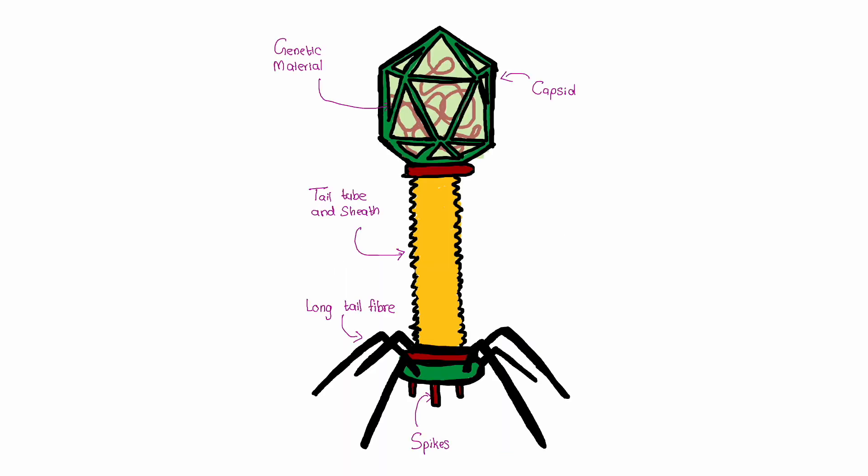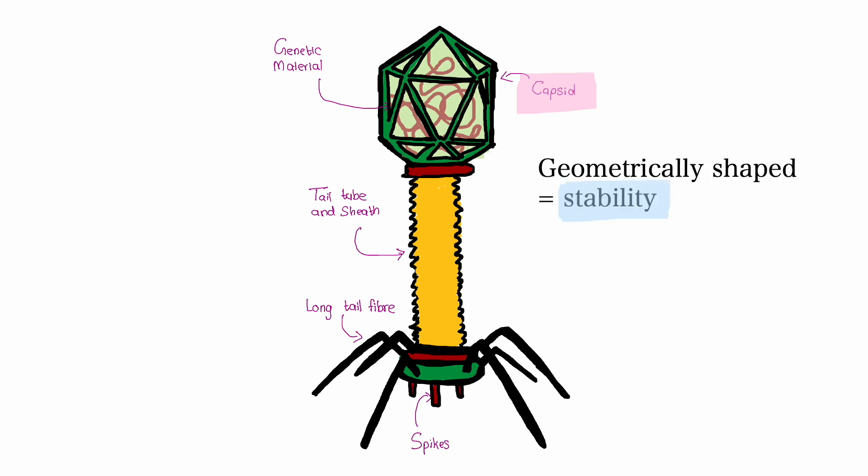Let's consider the composition of a bacteriophage. A typical bacteriophage consists of several components. The most prominent part is the capsid, which is a protein shell that protects the genetic material inside. The capsid is often geometrically shaped, providing stability to the phage.